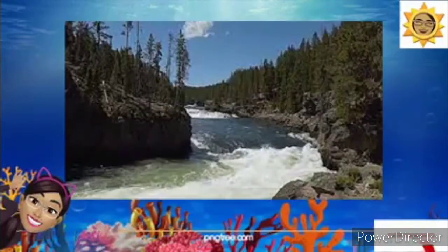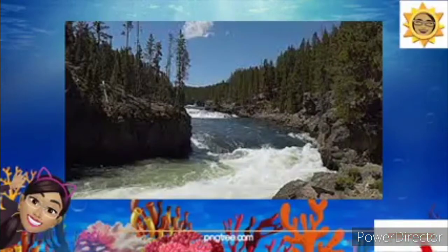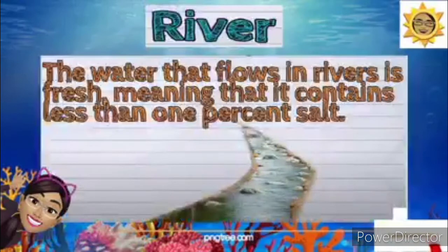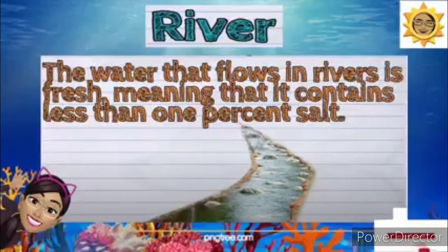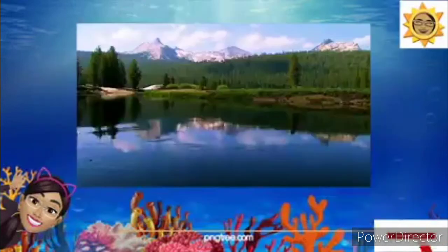Okay, so what about this picture? There's flowing water. Very good — this is a river. The water that flows in rivers is fresh, meaning it consists of less than 1% salt. The water flows going to the sea. Good job. Say river.